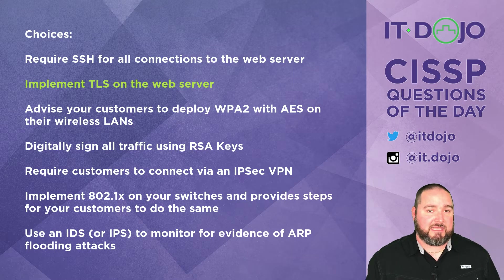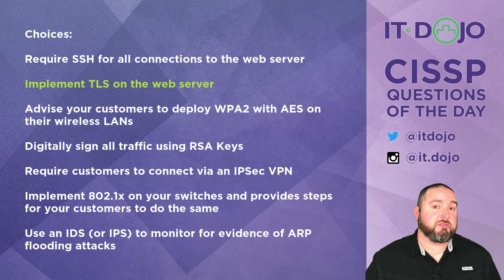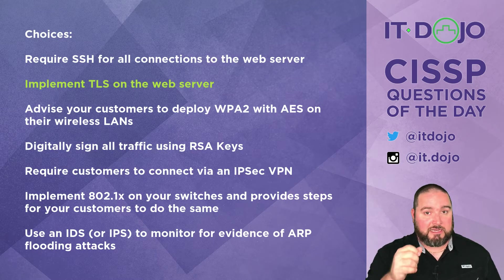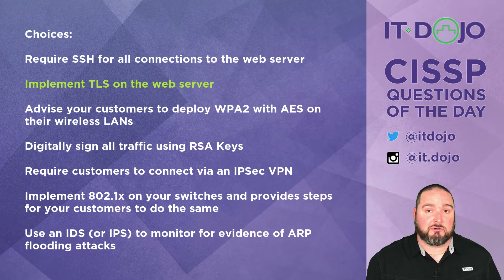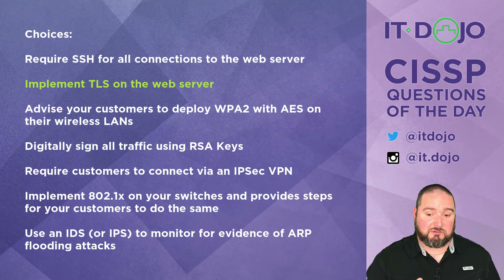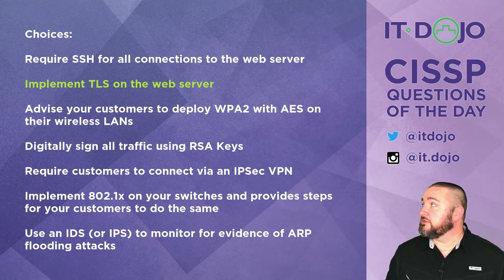The third option says you should contact your customers and advise them to implement WPA2 with AES on their wireless LANs. Well, that would be nice, but: A) you can't make sure they do it; B) they may already be doing it; and C) that would only secure the data from their client to the access point — it says nothing about the data as it continues its journey toward your web server across their wired network and anywhere else through the internet. WPA2 with AES handles just one small stage of the journey; you need security for the entire journey, which is why TLS is the better answer.